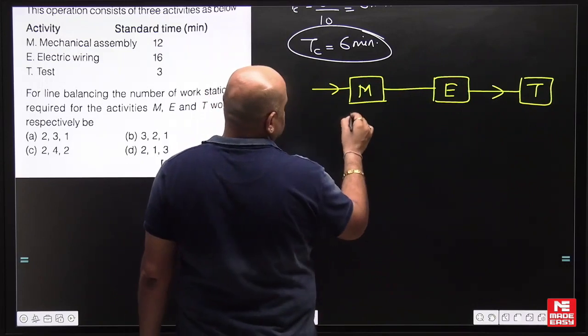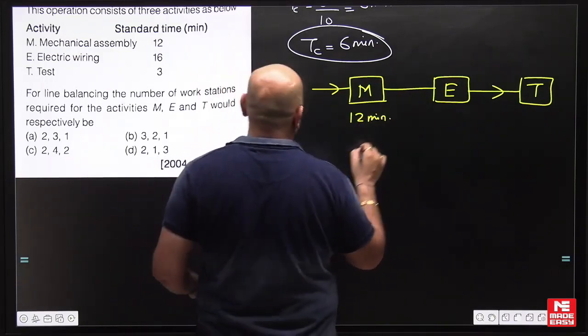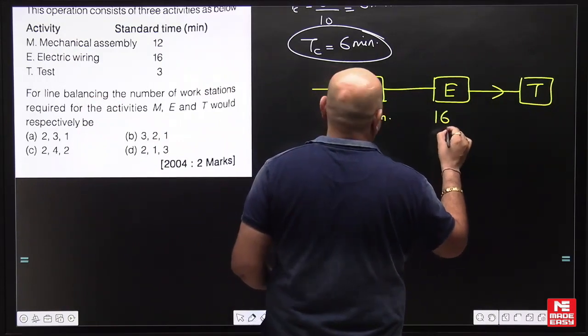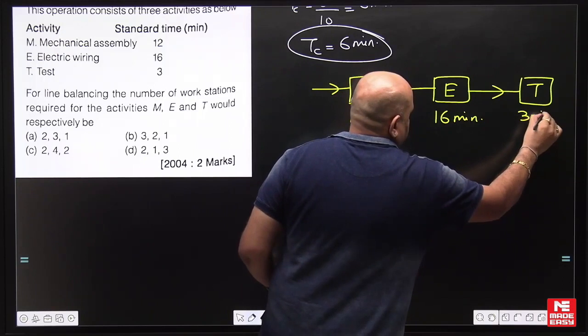Mechanical assembly requires 12 minutes, electrical wiring requires 16 minutes, and testing requires 3 minutes. The options are available - you can solve directly or check from the options.